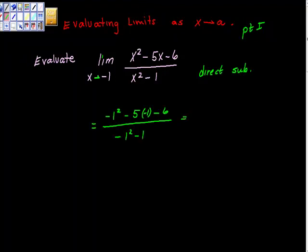And if you do all this math out, this becomes positive 1, this becomes positive 5, so 1 plus 5 is 6, 6 minus 6 is 0. Negative 1 squared is 1, and 1 minus 1 is 0.